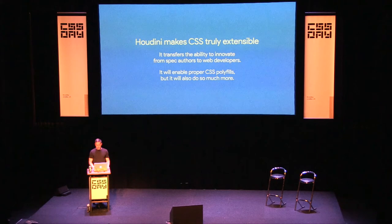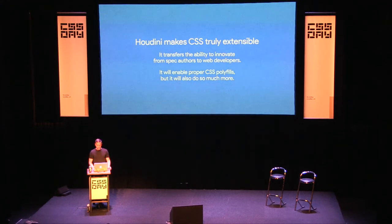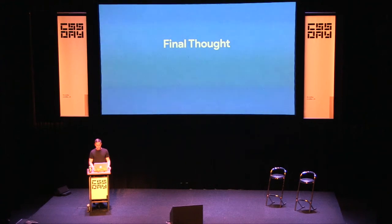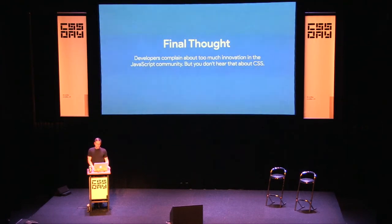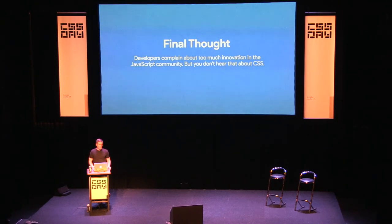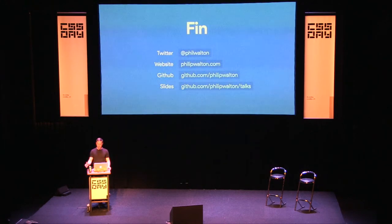Web developers are very creative and have come up with lots of really cool things. Houdini will enable proper polyfilling as described, but also much more — like the Material Design button ripple effect, which probably won't ever be a spec feature but is still cool and powerful with Houdini. I definitely recommend checking out Tab's talk tomorrow where he'll cover some of these other features. Final thought: developers in the JavaScript community complain about innovation moving slowly, but you don't really hear that in CSS — it's the opposite. We should advocate for changing that and try to make CSS fatigue a thing.